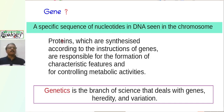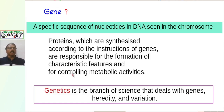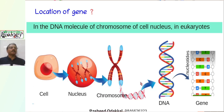Nucleotides are the basic structural units of DNA. Proteins, which are synthesized according to the instructions of these genes, are responsible for the formation of characteristic features and controlling metabolic activities of organisms. So genetics is the branch of science that deals with genes and characteristic features like heredity and variation. Genes are located in DNA molecules of chromosomes of cell nucleus in eukaryotes.